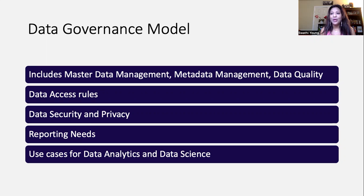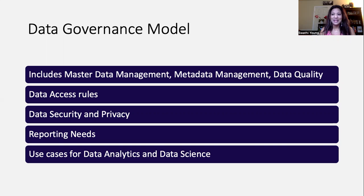Data security and privacy are also key. For example, if you have an HR system collecting date of birth, addresses, location-based information, and social security information, data privacy is of utmost importance — no other personnel should have access to that private data. Security means ensuring data at rest and data in motion is encrypted so bad actors cannot hack in. Reporting needs also matter — whether for regulatory purposes or to view which products and services are performing well — making it very important to establish your data governance model.